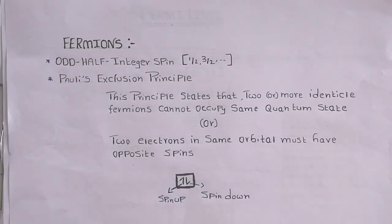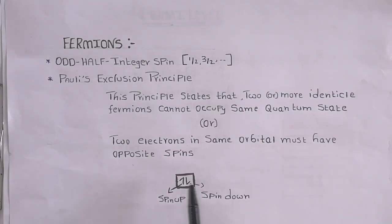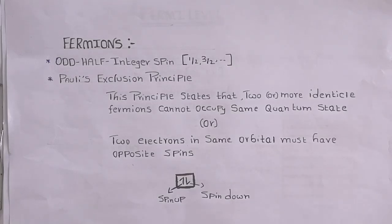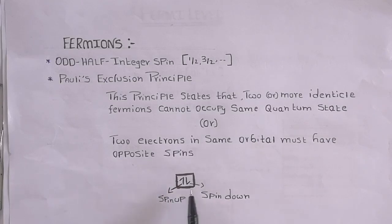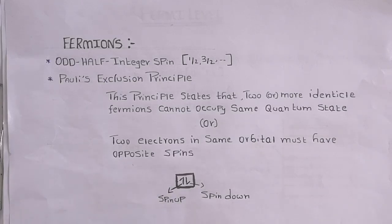Suppose we have two electrons — we can place these two electrons in a single state, but these two electrons should have spins anti-parallel to each other. You can see here this electron has spin up and this electron has spin down.